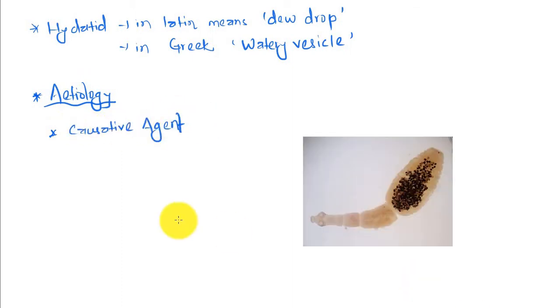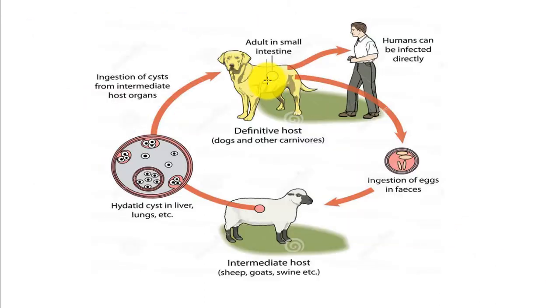Talking about etiology, the causative agent is Echinococcus granulosus, which you are seeing in the picture. It is made up of scolices, immature fragments, and mature or gravid segments with eggs. The adult worm lives in the intestine of the dog, which is the definitive host.